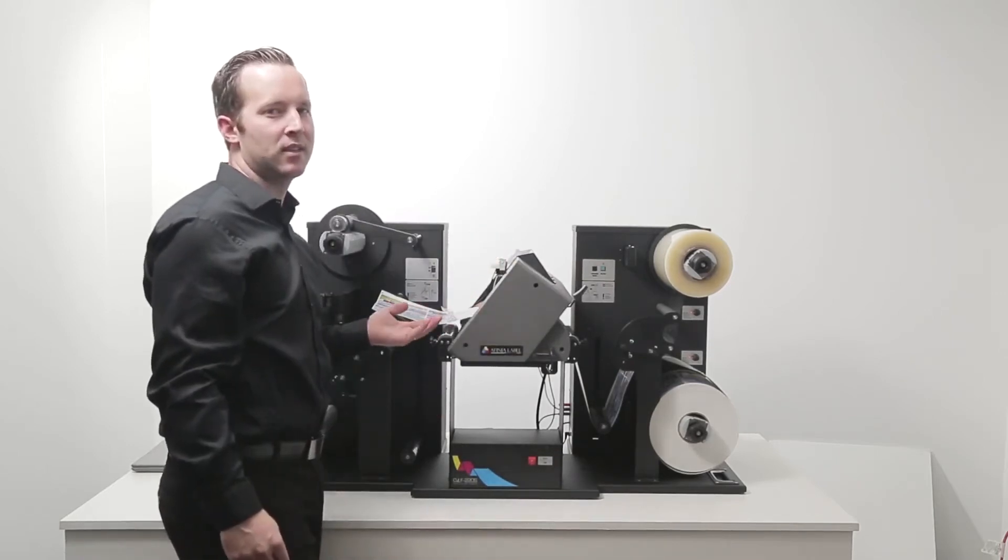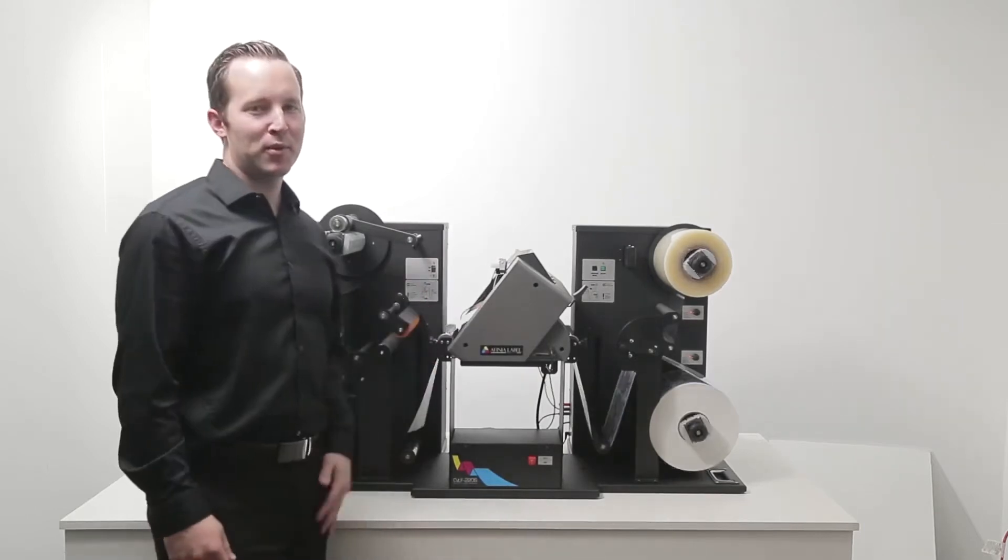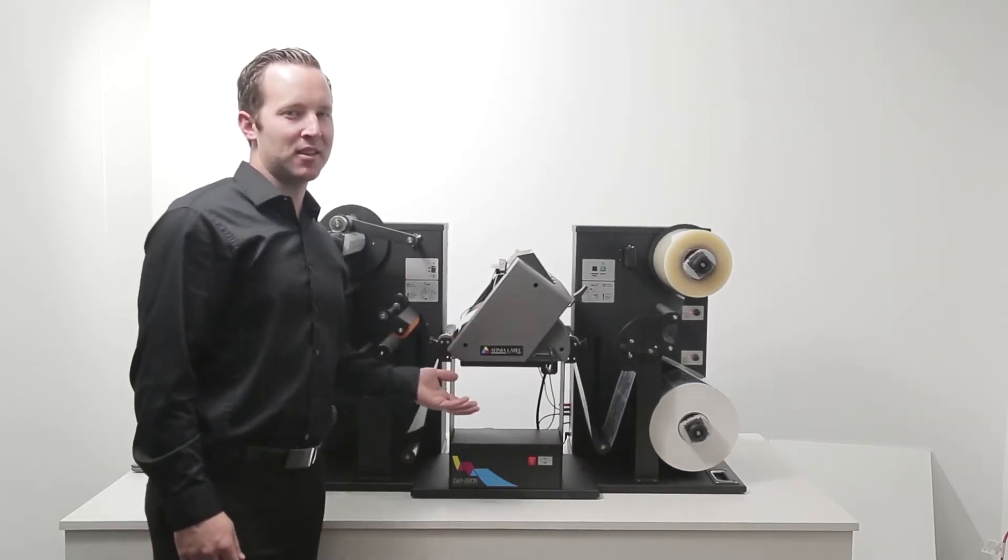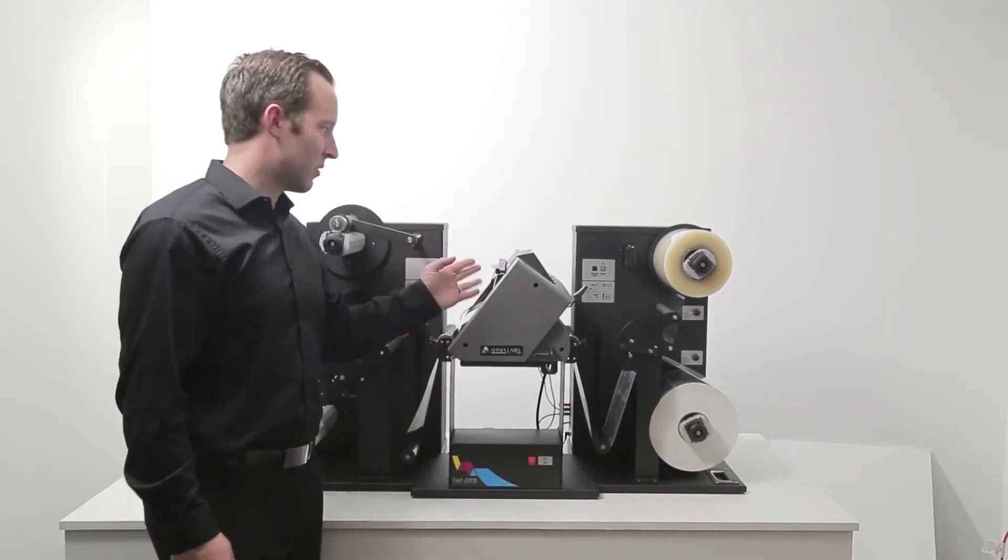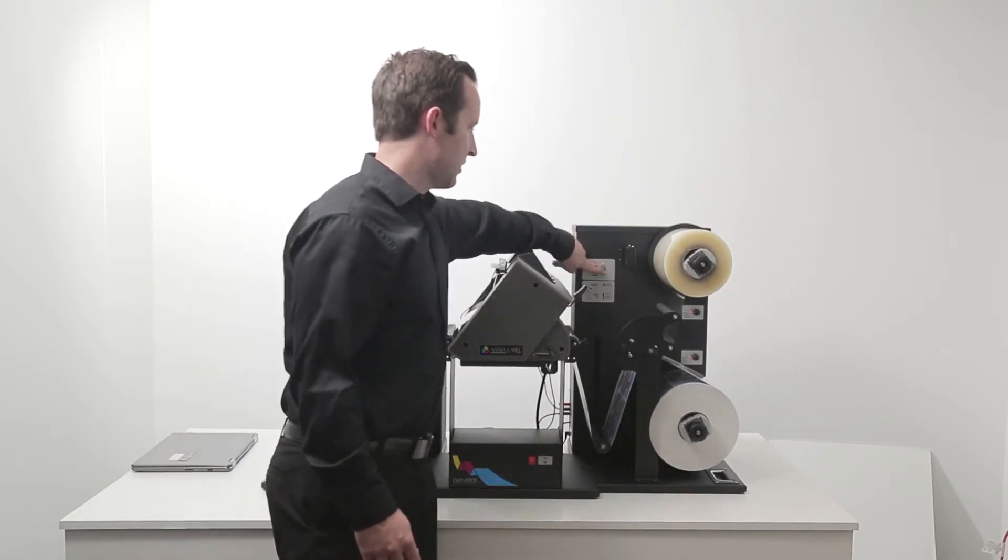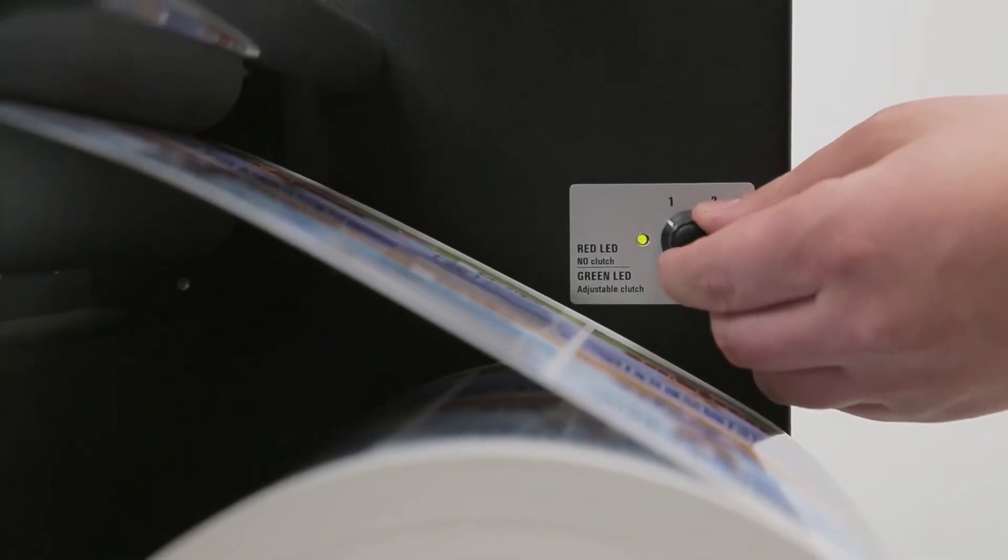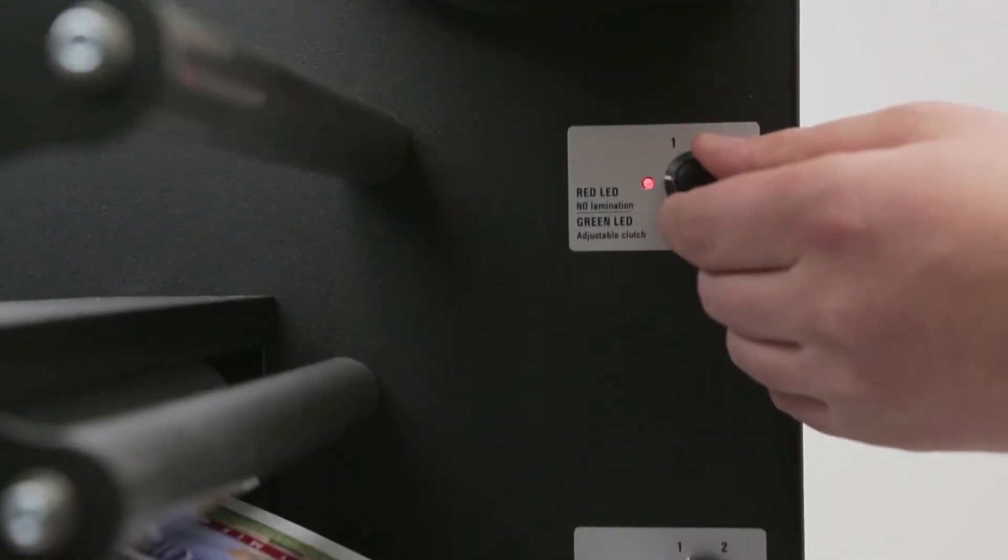The head will detect the width of the media and you're good to go. From here we need to step back for a second to adjust the tension. Power the unit on by pressing this green button and then adjust the tension on both cores to one.